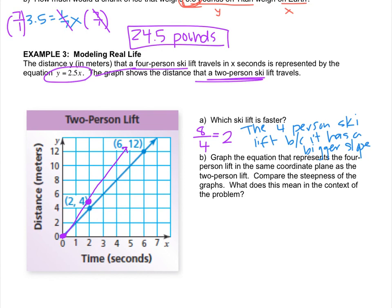Compare the steepness of the graphs. The four-person ski lift that I just drew is steeper, which makes sense to me because it's a bigger slope. And what it means in terms of the problem is that it's going faster.